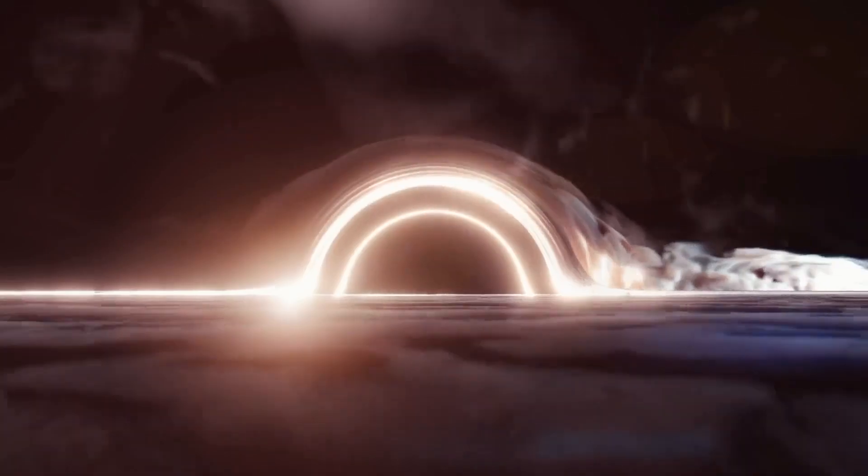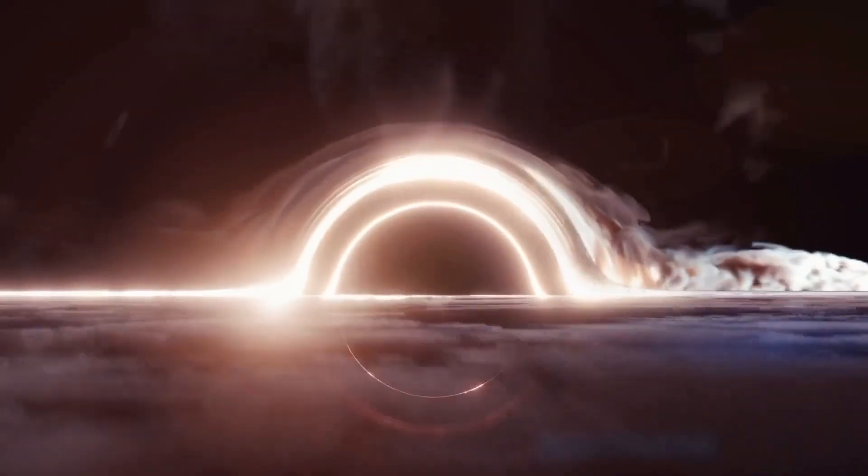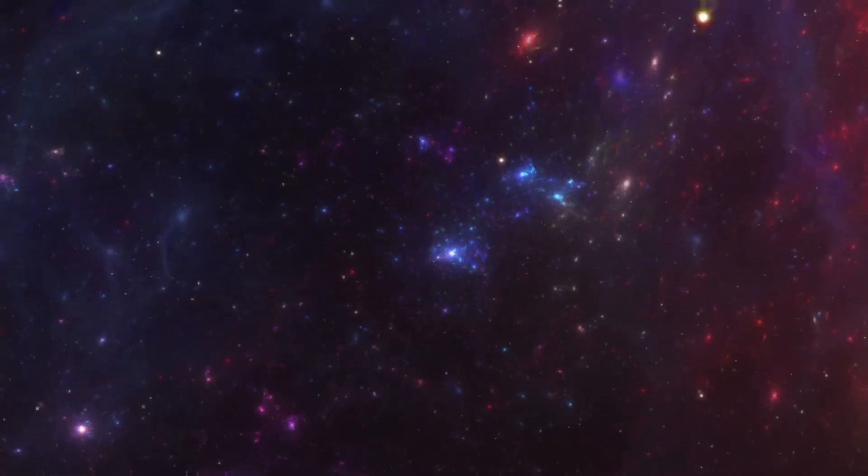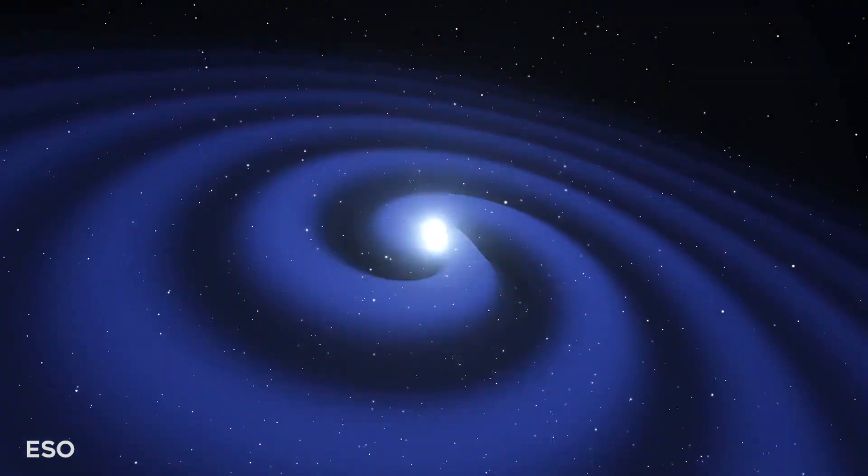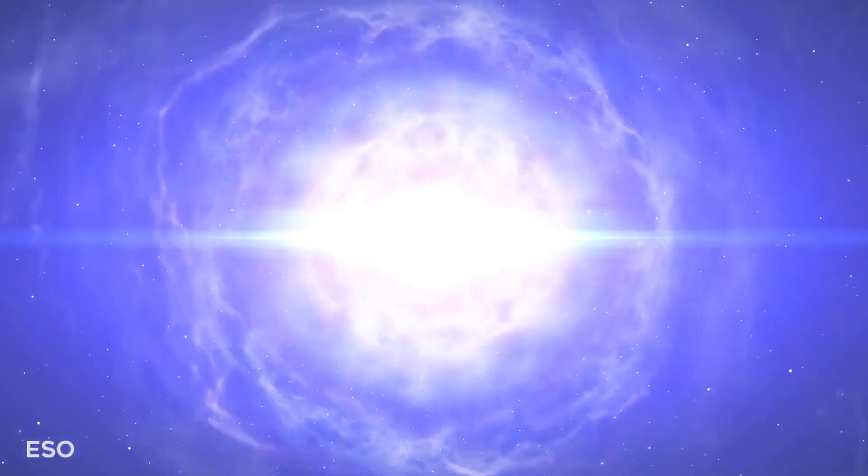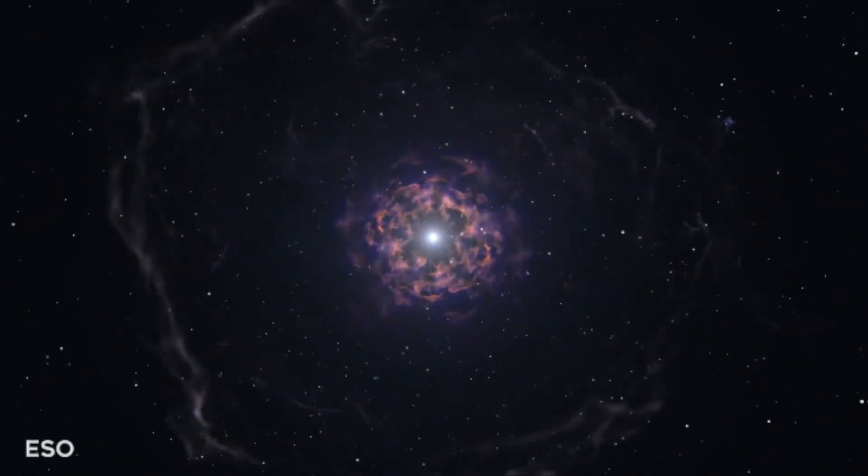These events generate a very similar disturbance in spacetime itself, the fabric that makes up our very reality. Some 130 million years ago, in a galaxy very far away, the smoldering cores of two collapsed stars smashed right into each other. The resulting explosion sent a burst of gamma rays streaming through space and rippling the very fabric of the universe.